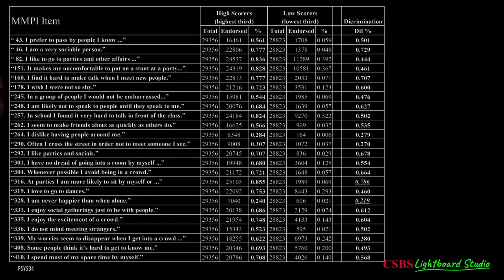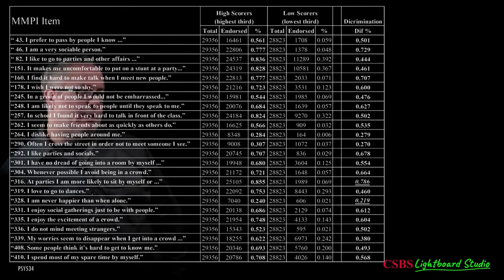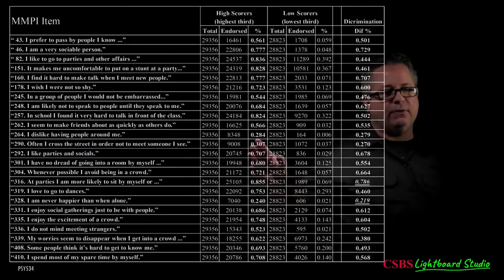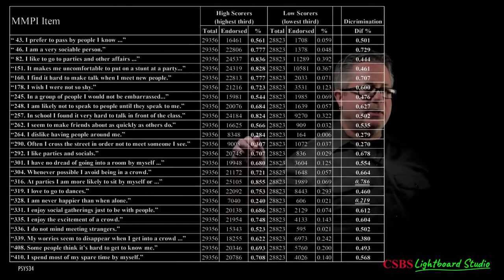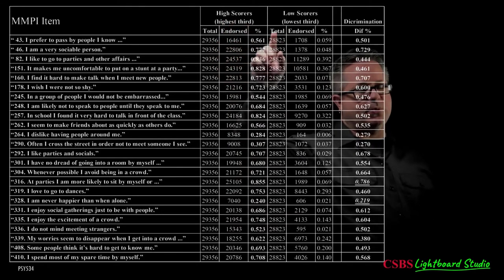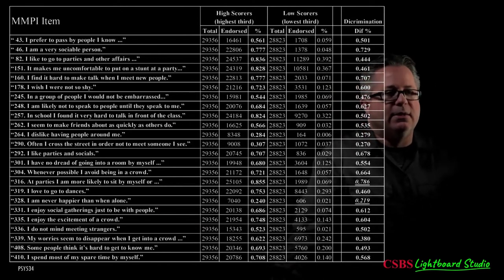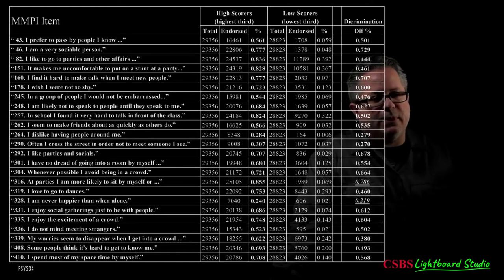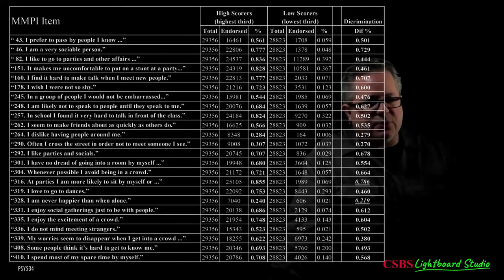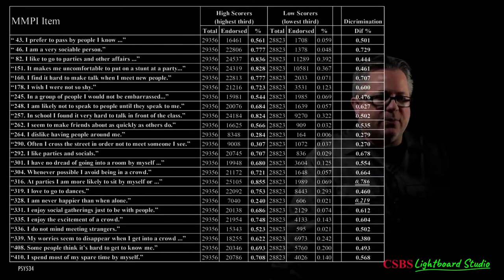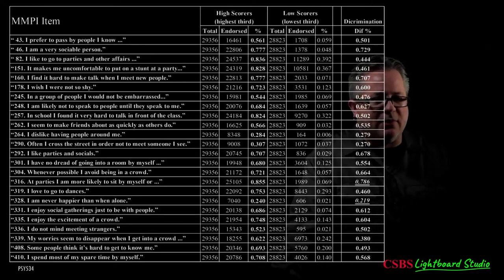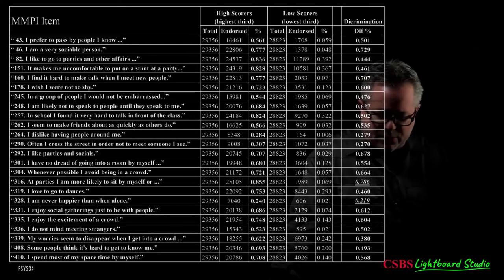Here's an example: I took 24 items from the MMPI identified as loading on a social anxiety construct — things like 'I prefer to pass by people I know on the street,' 'I'm a very sociable person' (reverse coded), 'I like to go to parties,' 'It makes me uncomfortable to put on a stunt at a party with others watching,' 'I find it hard to make talk when I meet new people,' 'I wish I were not so shy.'